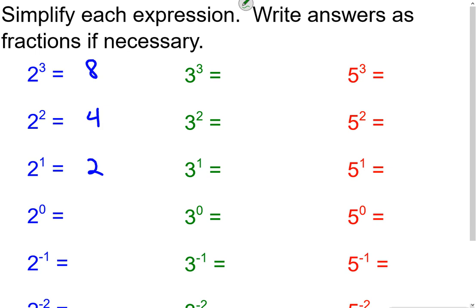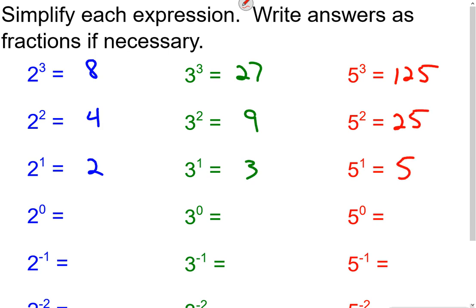As you're thinking about that, 3 to the third is 27, 3 to the second is 9, 3 to the first is 3, and now we're back to 3 to the zero — what does that equal? Moving on to 5: 5 to the third is 125, 5 to the second is 25, 5 to the first is 5, and now 5 to the zero — what do you think that equals?